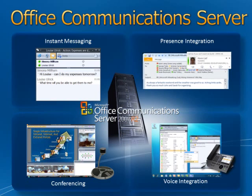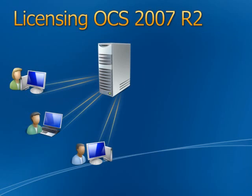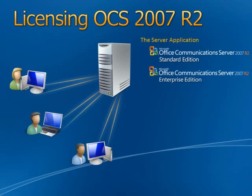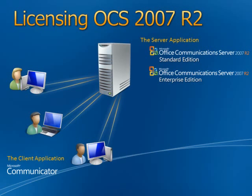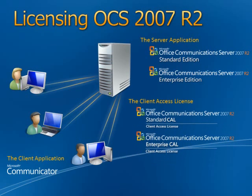Let's have a look at how OCS is licensed. This licensing model is very similar to Exchange Server. At the server end, you have a choice of the Standard and Enterprise Editions of Office Communications Server. The client application is Office Communicator, which is part of the Office Professional Plus 2010 suite — if you have that suite, you would already have your Communicator license. There are Standard and Enterprise CALs available based on the functionality you need to access within Office Communications Server. You also have external connector licenses.